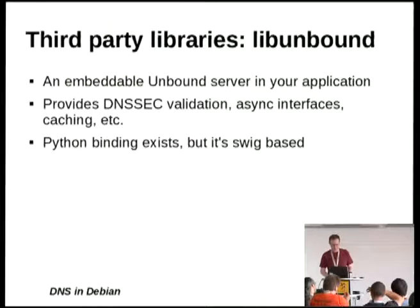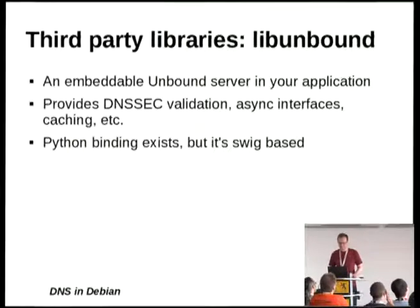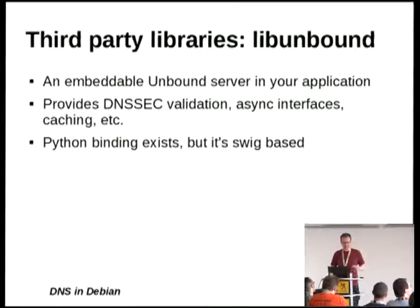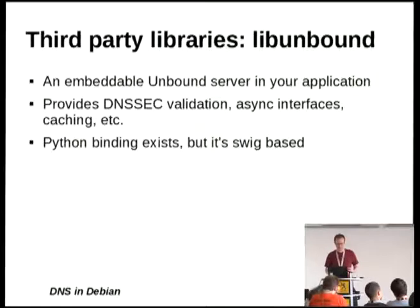There's another library called libunbound, from the same vendor as libldns. It's sort of like putting an unbound server inside your application and running it. Unbound is a fairly lightweight DNS server, but embedding the whole thing into your application is a fairly heavyweight thing to do. If you absolutely need DNSSEC validation inside your process, or need async caching, this is probably what you want to use. It also has SWIG-based Python bindings.